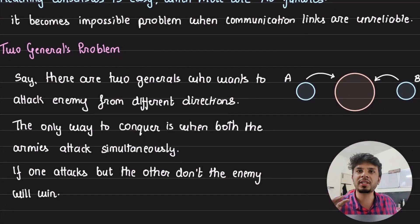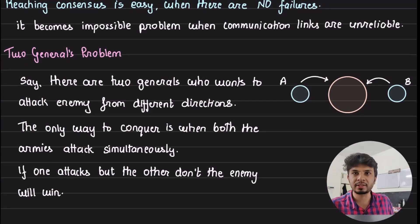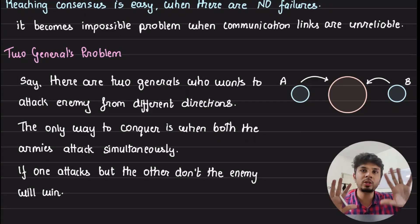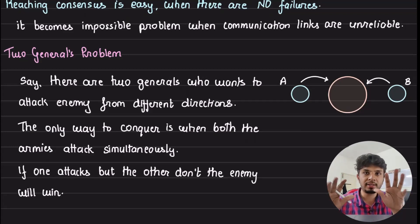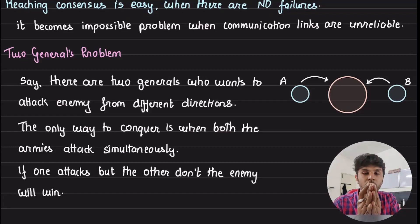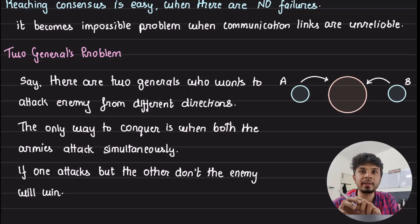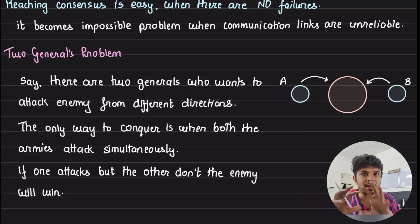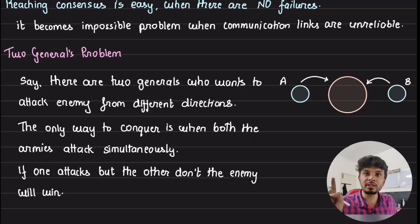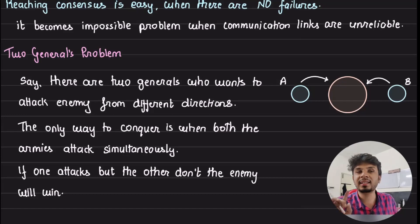The real-world analogy is called the Two Generals Problem. You have two armies led by two different generals, A and B. Both generals want to attack a common territory sitting in between them. To acquire the territory, both of them have to attack simultaneously — if A attacks and B attacks, the territory is theirs, but if only one attacks while the other does not, they lose the battle. Both generals need to coordinate on when to attack, ensuring they attack simultaneously. This is the classic Two Generals Problem.